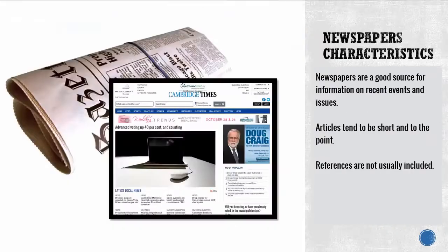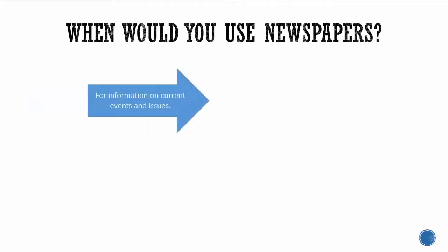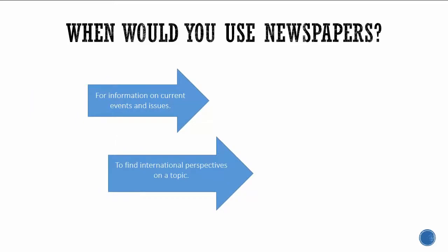What about the characteristics of newspapers? Newspapers are a good source of information on recent events and issues. Articles tend to be short and to the point, and references are not usually included. Typically you'd use them to find information on current events and issues, international perspectives on a topic, or local information.